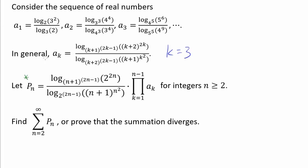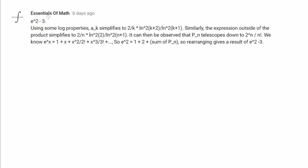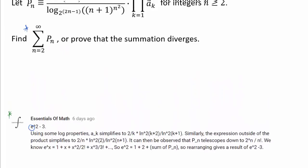That sounds crazy enough, but we are not even done. We now have to find the summation from n equals 2 to infinity of p sub n, or prove that the summation diverges. I want to recognize Essentials of Math for being the very first person to correctly answer this challenge. One interesting thing is that the answer seems to contain E — that's pretty fascinating. Let's try to find out where this E is coming from.